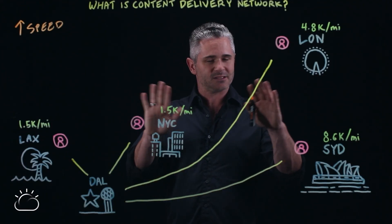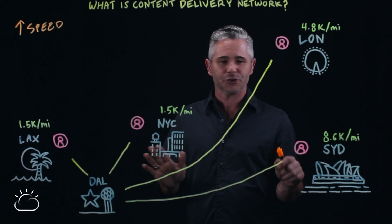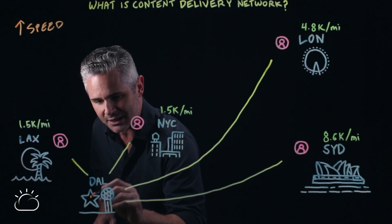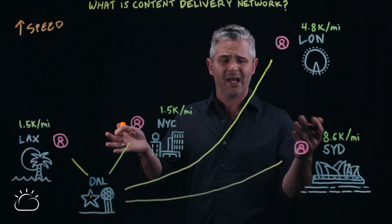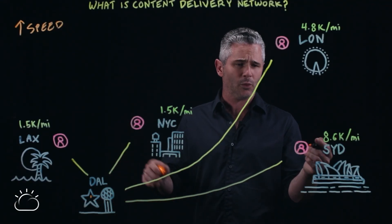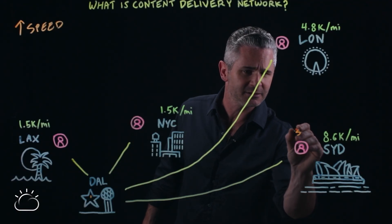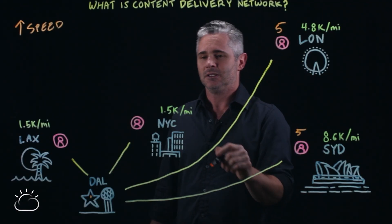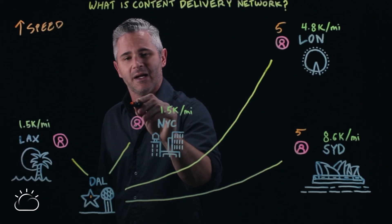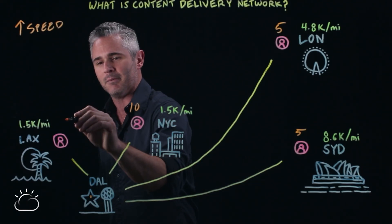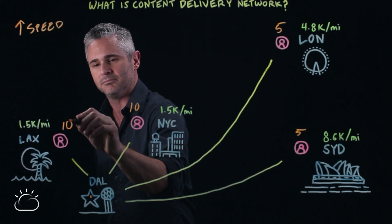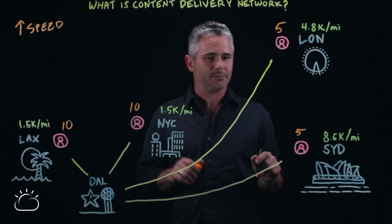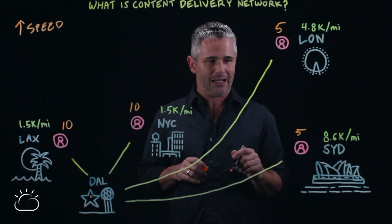I've got a simple diagram here showing a server hosted down in Dallas — this is my website — and I have users all around the world. In Sydney I might have five, in London I've got five, New York I might have ten, LA I might have ten. I've got 30 users around the world accessing my server in Dallas.